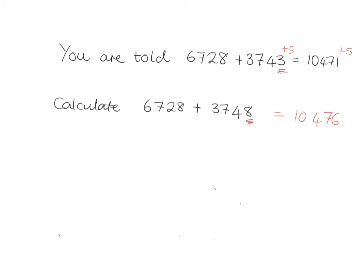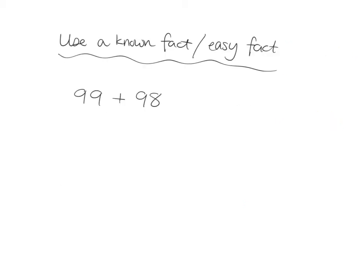So this was really our first strategy: using a known or easy fact. In the previous one you saw, we were given a fact, a known fact, and we could get the next sum out just by using it. More often than not, of course, you're going to have to come up with a fact yourself.